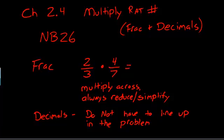Good evening. Today we're going to be looking at chapter 2, section 4, which is multiplying rational numbers. Remember, rational numbers are numbers like fractions and decimals.